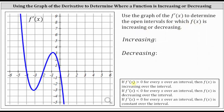If the first derivative is positive over an interval, then the function is increasing over the interval. If the first derivative is negative over an interval, then the function is decreasing over the interval. And if the derivative is equal to zero over an interval, the function is constant over the interval.